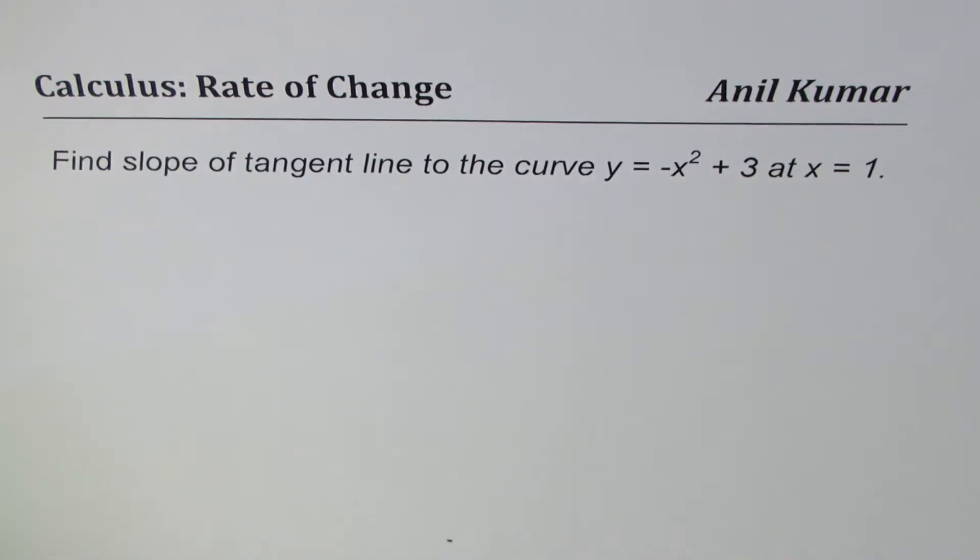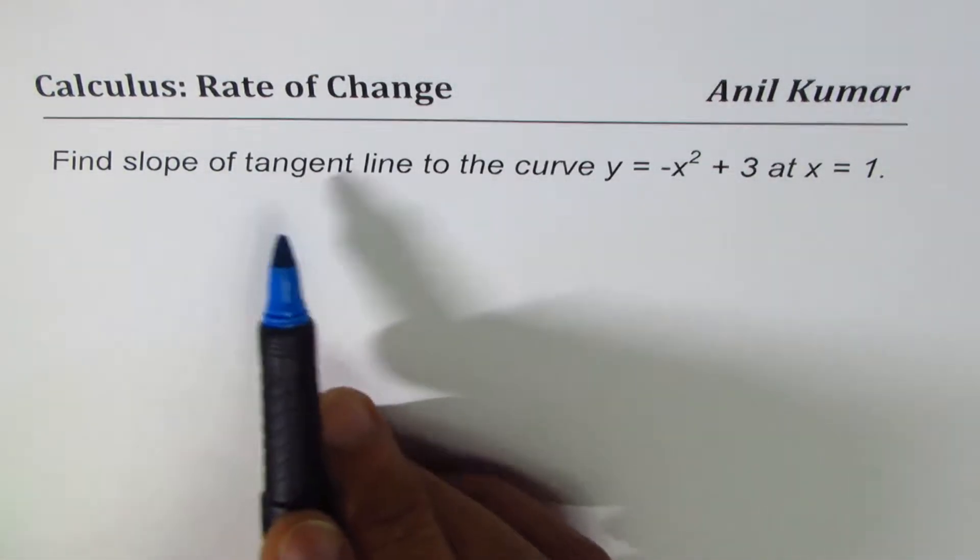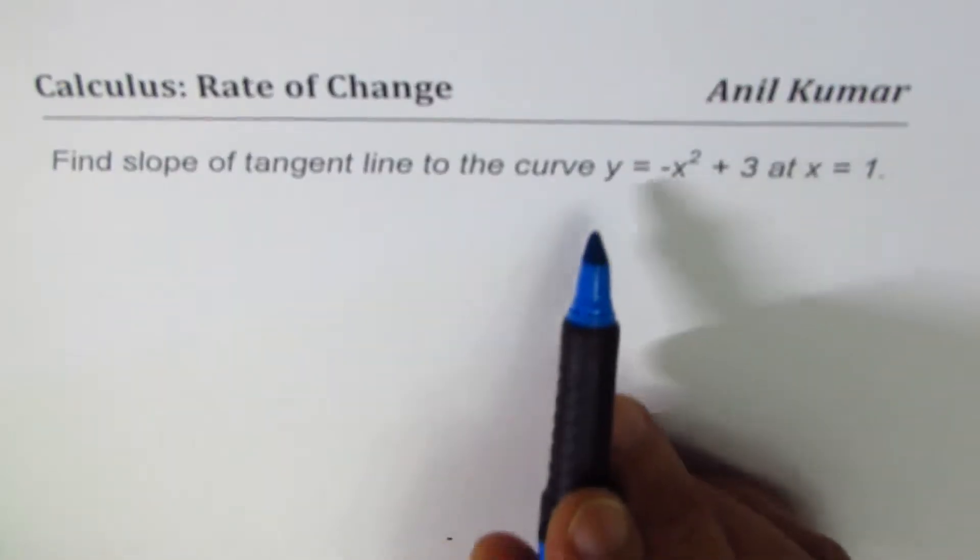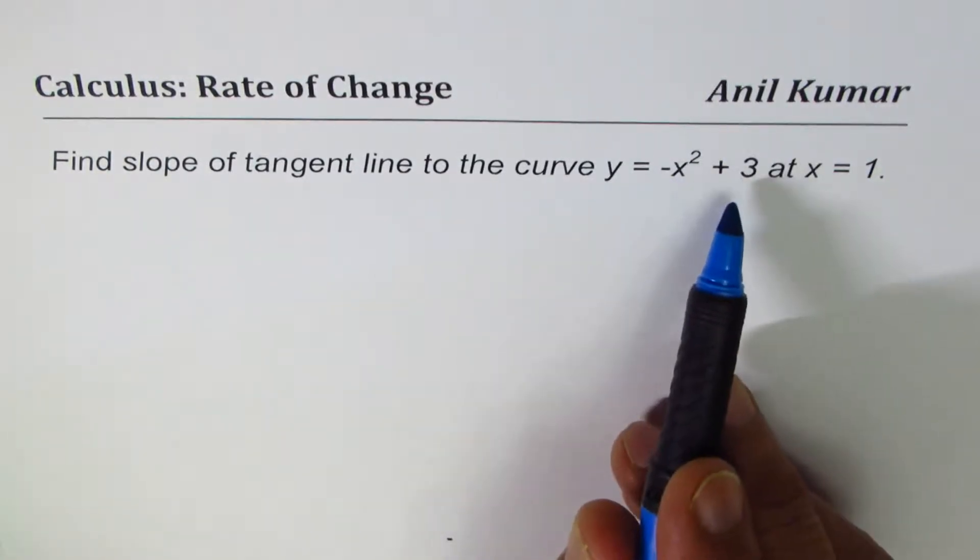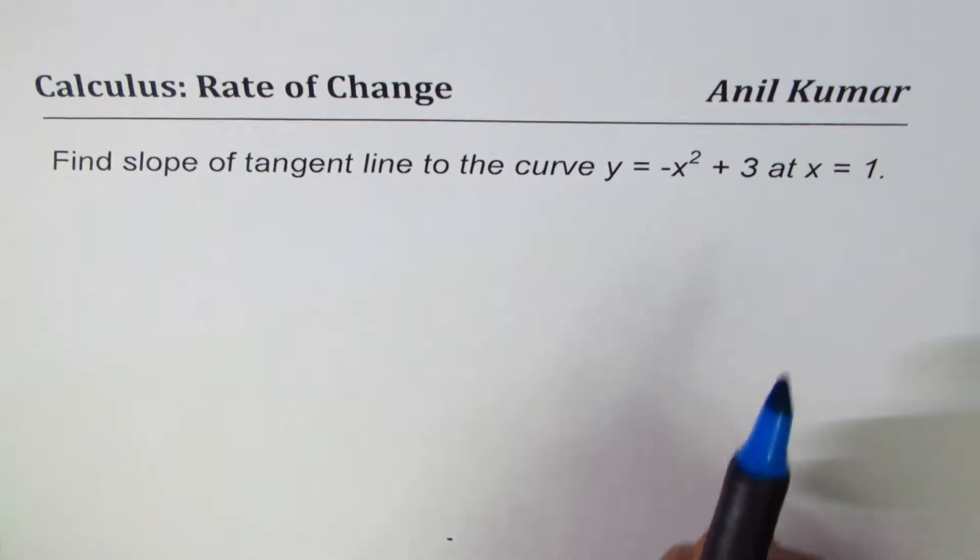In calculus we try to find slope of tangents on different curves and so this becomes a very important topic to start with. The equation here is find slope of tangent line to the curve y = -x² + 3 at x = 1.